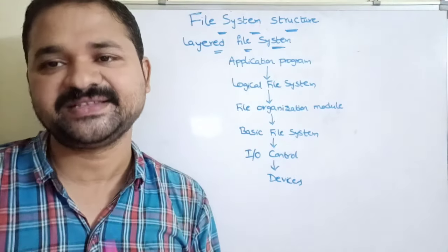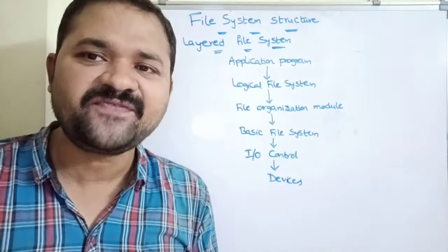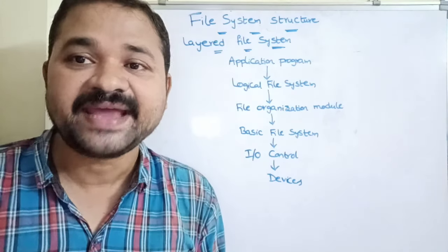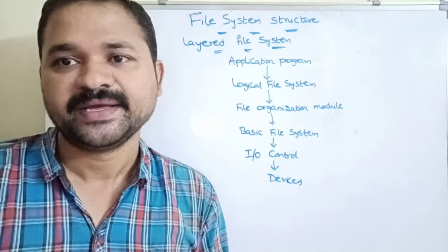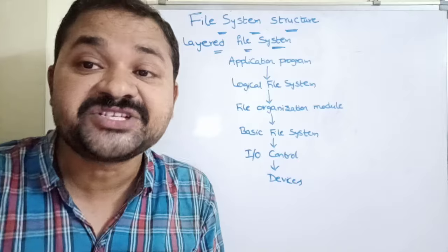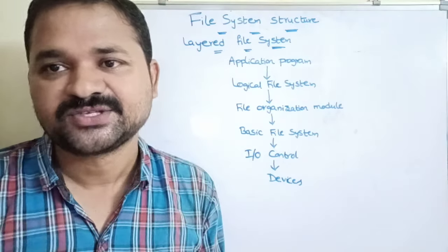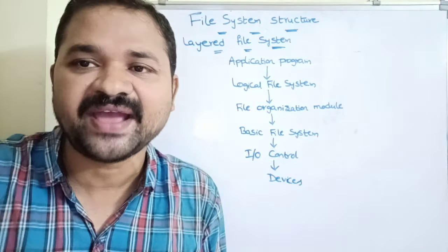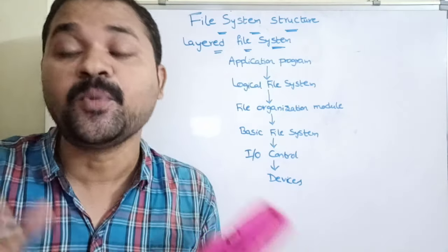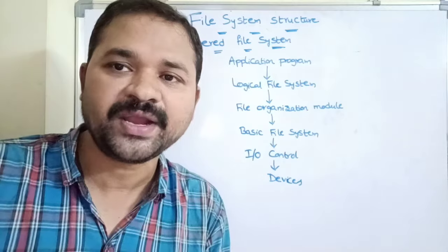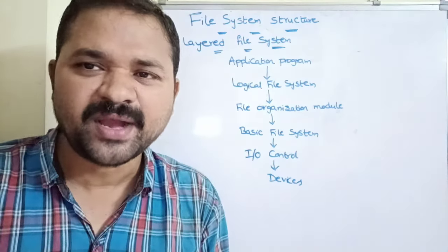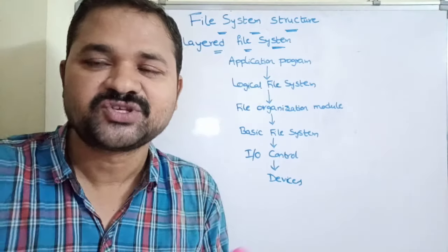That file will be given as input to the logical file system. The logical file system checks whether that file is present in the directory structure or not. If the file is present, it finds the location of the corresponding file — specifically, in which location the file is present — as well as the logical block number.